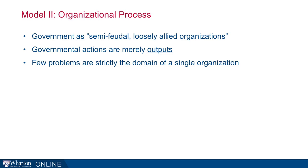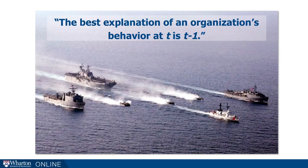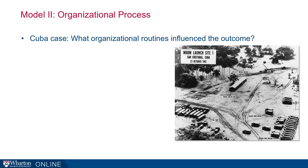Few problems in organizations, especially governments, are strictly the domain of a single part of the organization — they get factored and divided across organizations, leading to difficulty in coordination and factionalization. Allison has a great quote: 'The best explanation of an organization's behavior at T is T minus one.' What he means is, if you want to understand why an organization did what they did today, just look at what they did yesterday. There's so much inertia and routine that much of what we observe is just a product of what they've been doing.